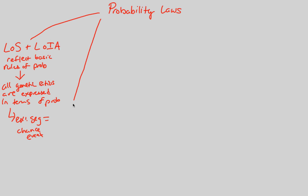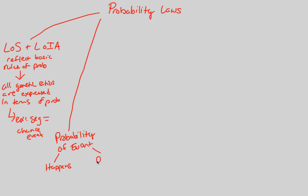We can put this into more specific context by understanding the probability of an event. The probability of an event can be one of two things: it can happen or it doesn't happen. When something happens, the chance of it happening is equal to one. If something doesn't happen, the chance is equal to zero. Between zero and one, there's a whole slew of possibilities — 0.1, 0.9, 0.01, 0.099. That's how geneticists utilize probability in determining if something occurs and at what point on the spectrum.